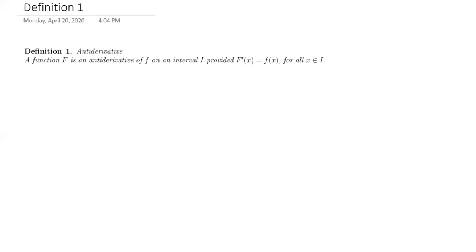You have a function and you can take its derivative. So what's integration going to be? It's going to be a way of going back to the original function from its derivative. In order to start with that mechanism, we begin with Definition 1 of an antiderivative. A function capital F — and note that for antiderivatives we typically use capital letters — is an antiderivative of little f on an interval I, provided that the derivative of capital F equals f for all x on I.